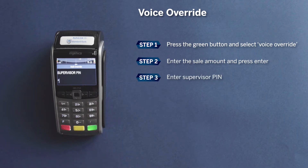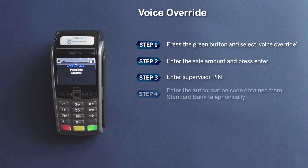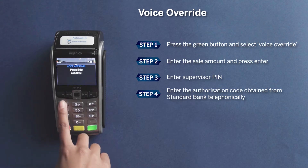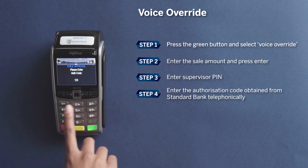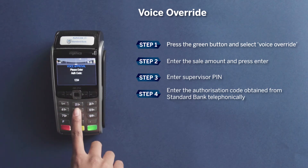Enter your supervisor PIN. This is a PIN you chose when the Autolink device was set up. You then need to enter the authorization code obtained from the bank. The code cannot contain any special characters or blanks.